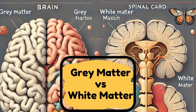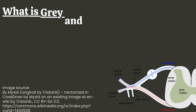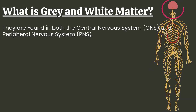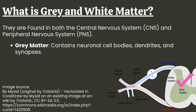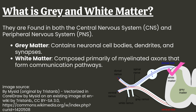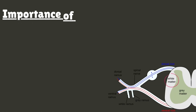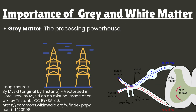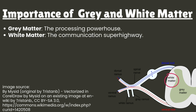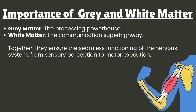In this video we will discuss gray matter versus white matter. They are found in both the central nervous system and peripheral nervous system. Gray matter contains neuronal cell bodies, dendrites, and synapses. White matter is composed primarily of myelinated axons that form communication pathways. Gray matter is the processing powerhouse, white matter is the communication superhighway. Together they ensure the seamless functioning of the nervous system from sensory perception to motor execution.